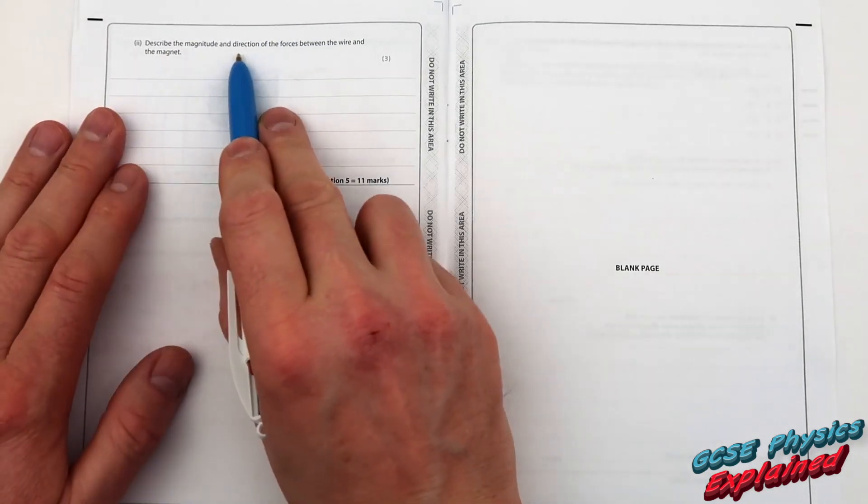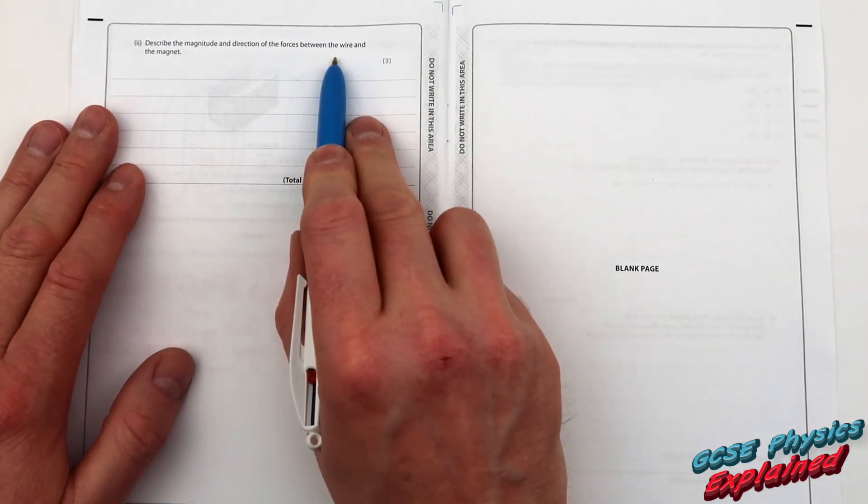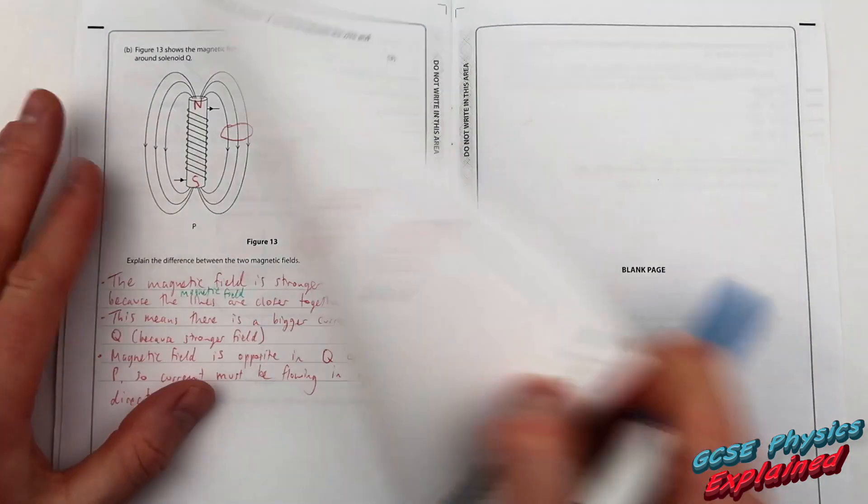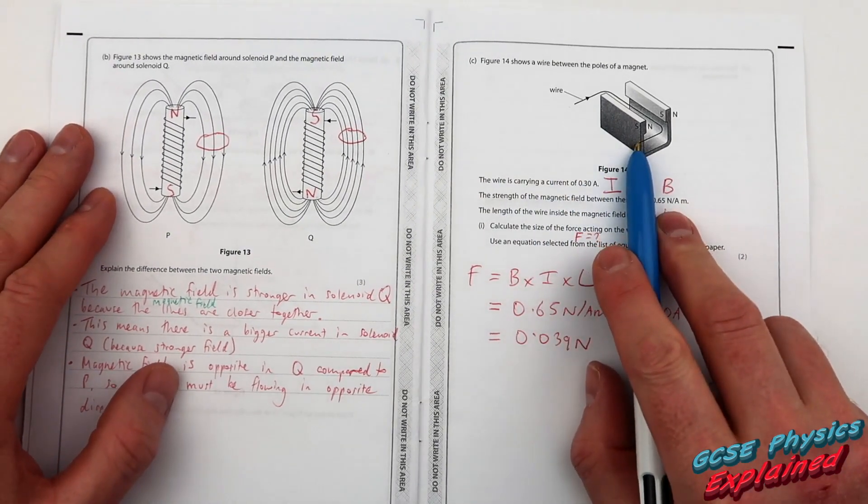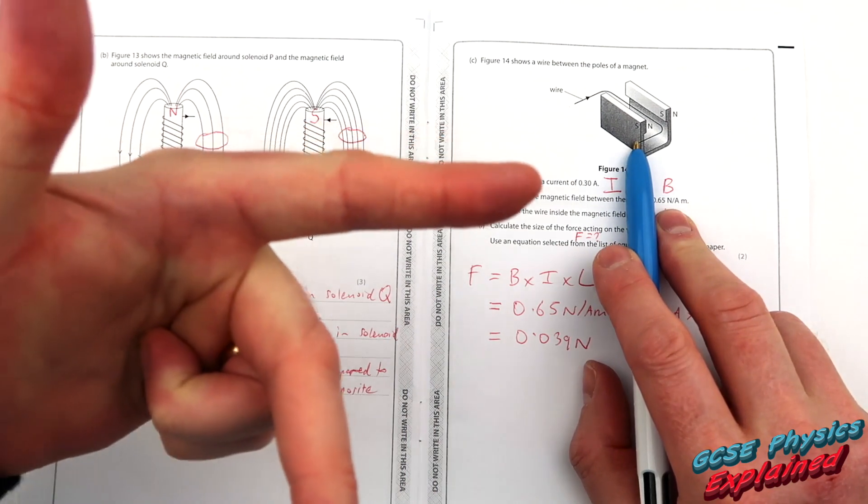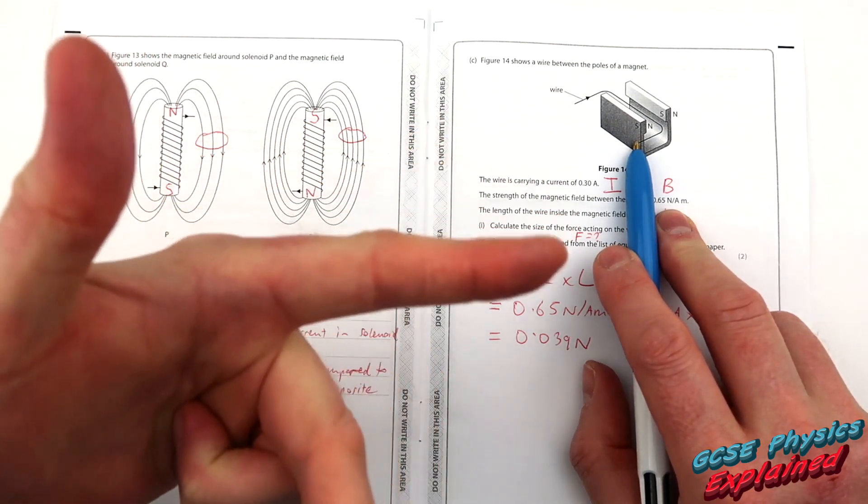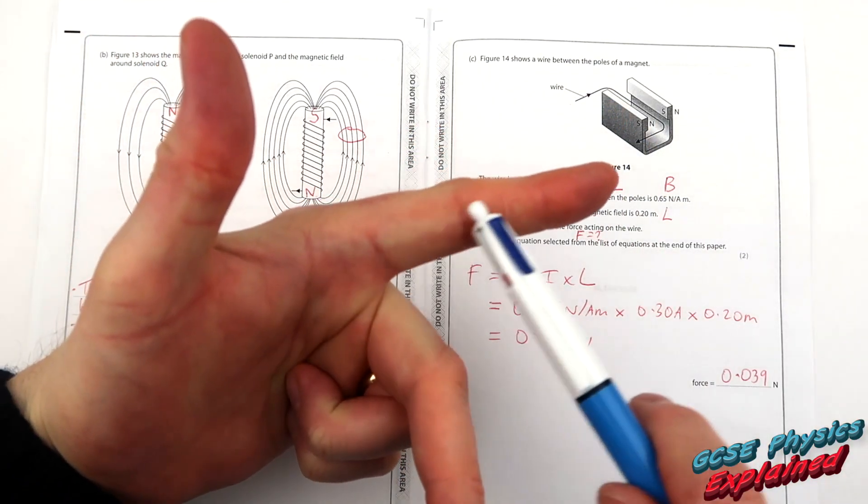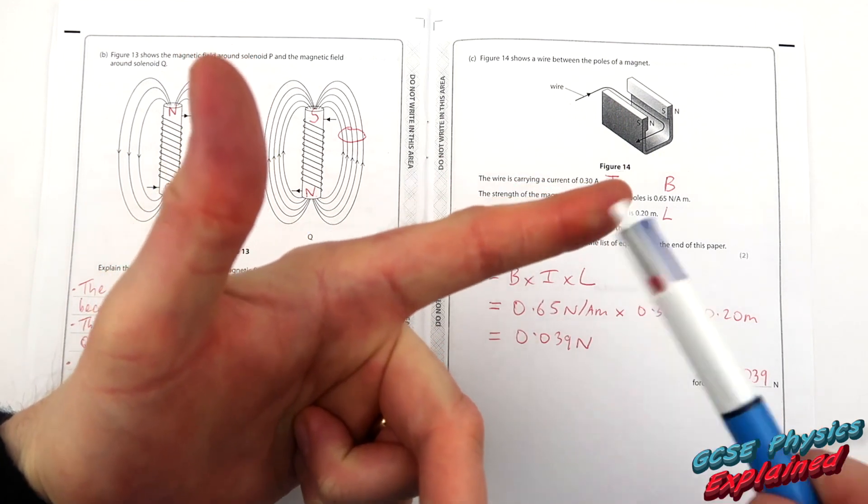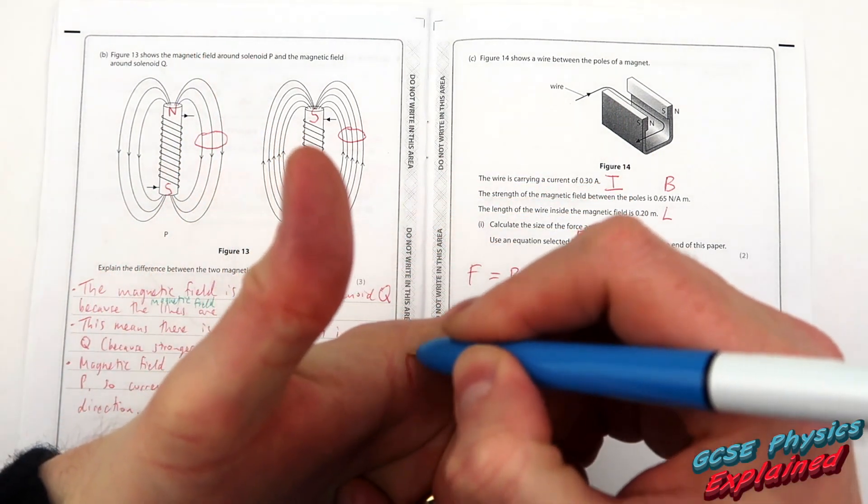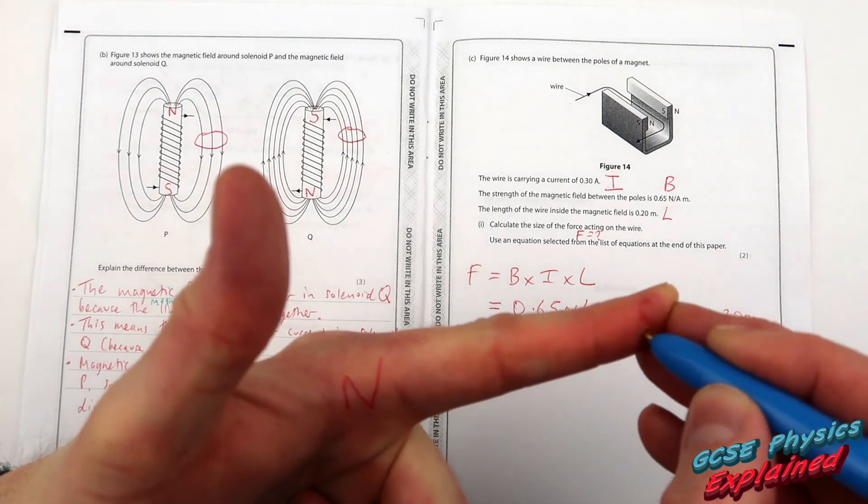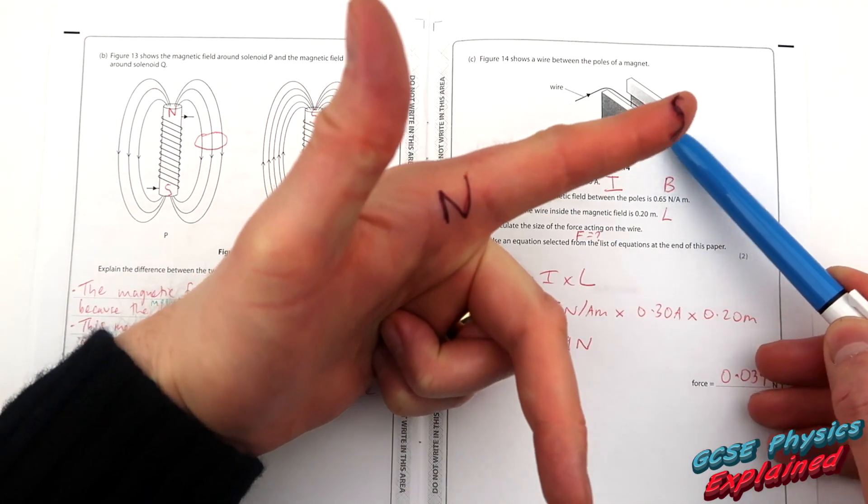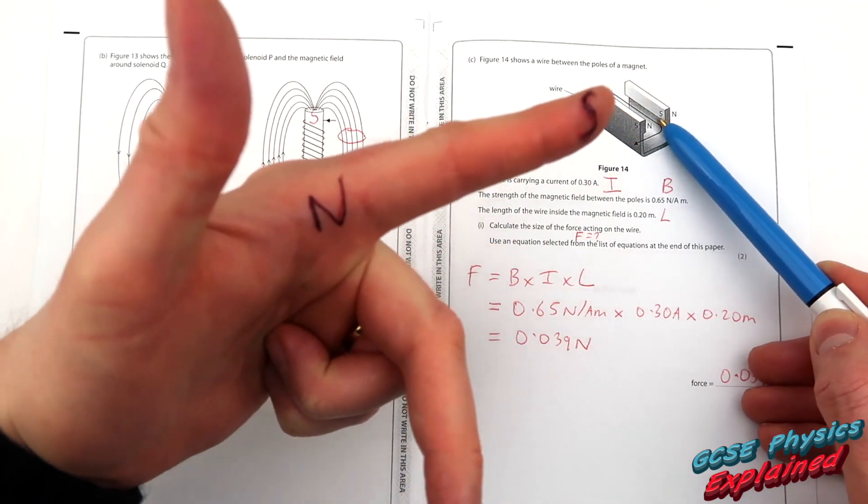Part 2 Describe the magnitude and direction of the forces between the wire and the magnet. This is Fleming's left-hand motor rule. I've got a lovely video on that if you want to click the link above to find out more about that. Now the first finger shows you which way the magnetic field travels and it always travels no no no knuckles north fingertips are south.